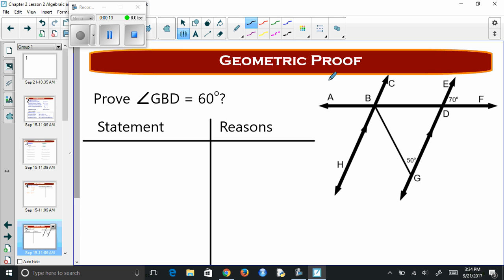First thing first, we look at this and try to talk about anything that we're going to need. We want to prove that angle GBD is 60 degrees. To do so, think about the things that we need.